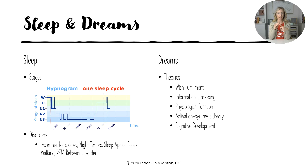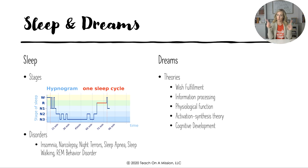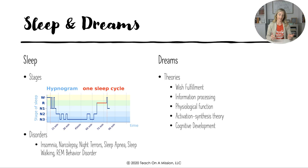Know the sleep disorders: insomnia, narcolepsy, night terrors, sleep apnea (stopping breathing, requiring a CPAP machine), sleepwalking, and REM behavior disorder — where the body is not paralyzed during REM as it should be, causing people to act out their dreams. Stage three is the deepest and hardest to wake from, but REM is the most restful because the body is paralyzed while the brain is very active, making it the paradoxical stage of sleep.